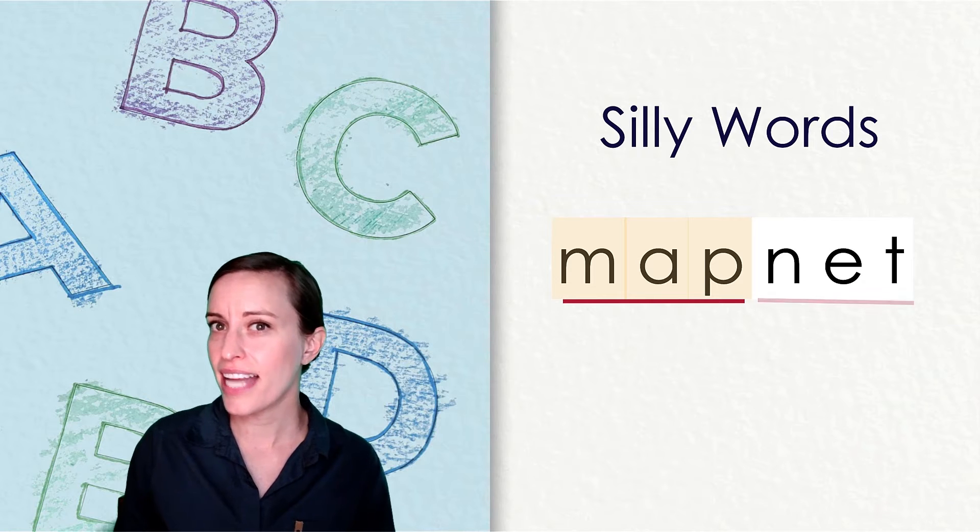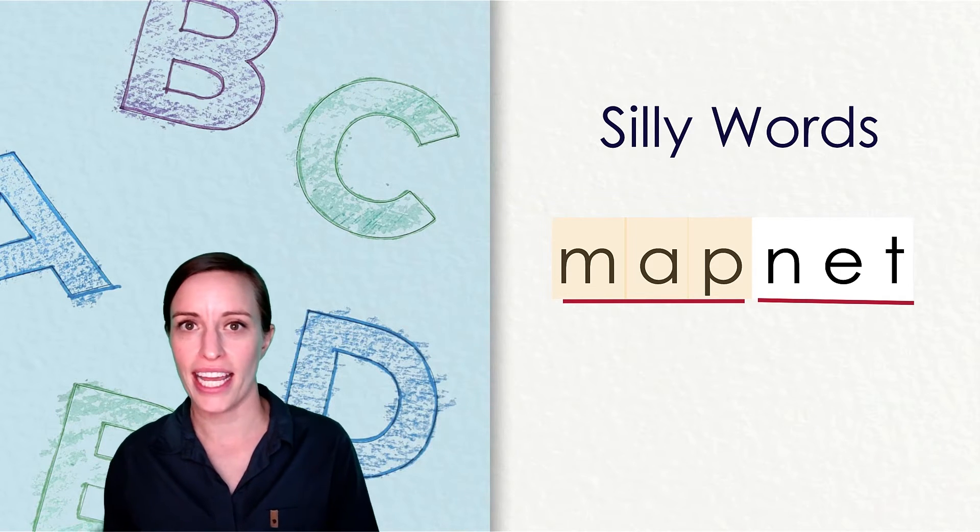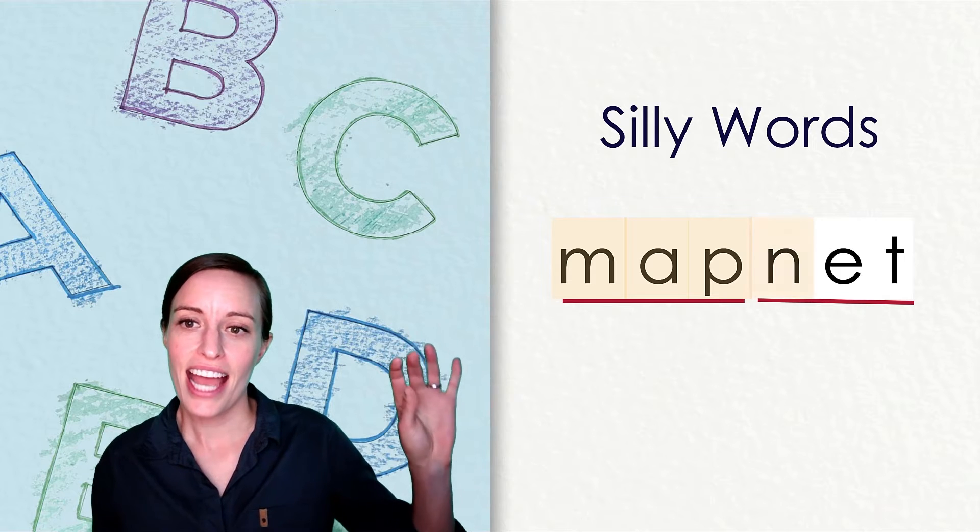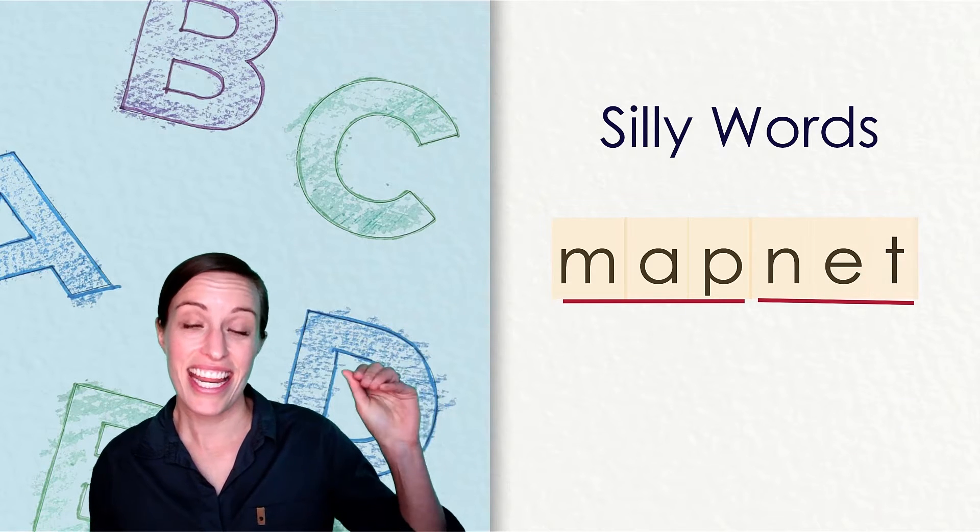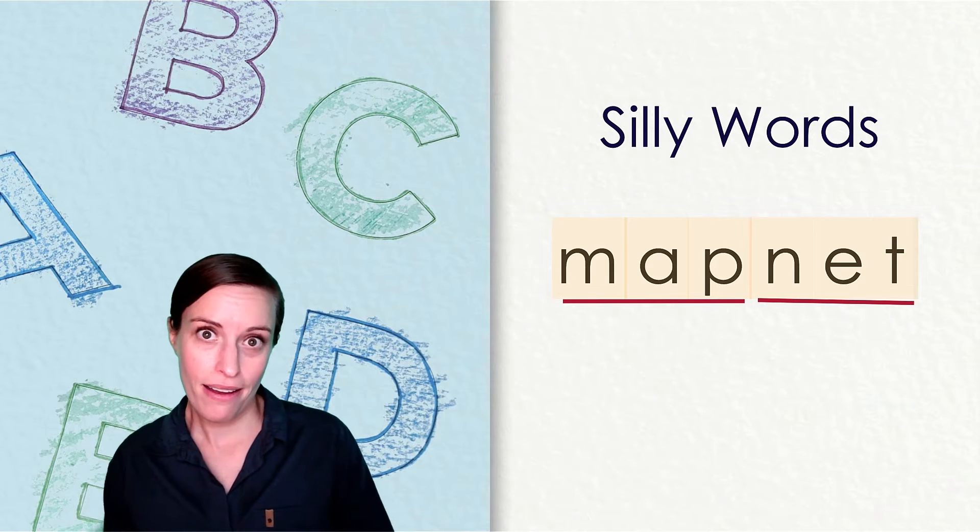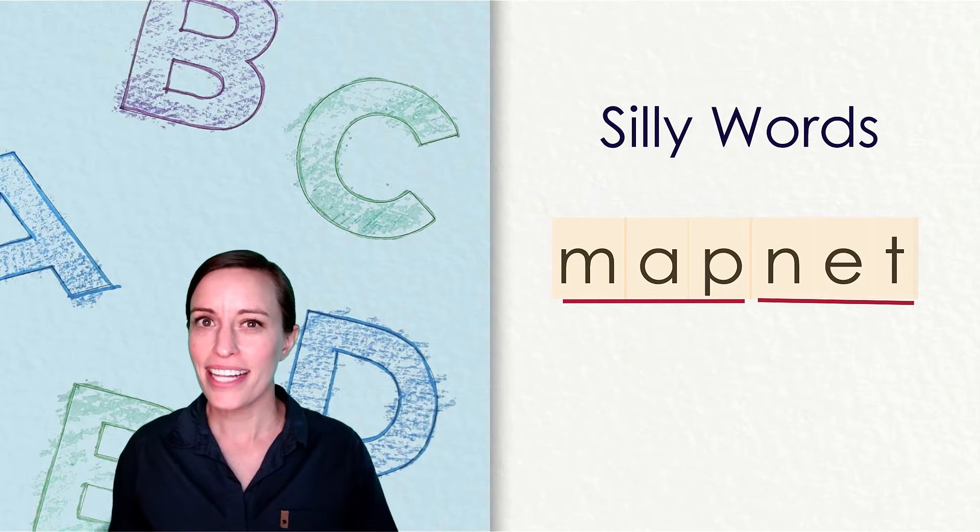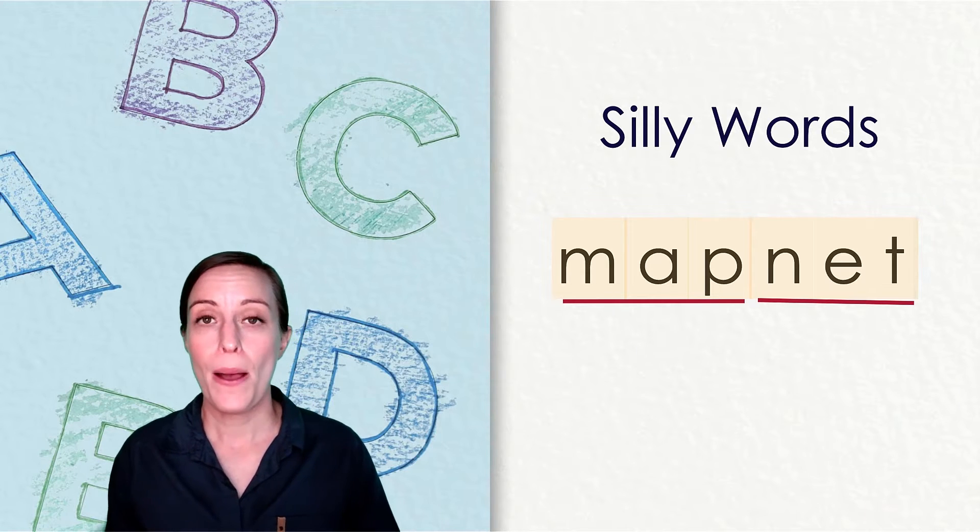Let's look at the second syllable. I see that vowel in it. N-E-T. Net. So the first syllable was map. The second syllable is net. Put that together and I get map net.